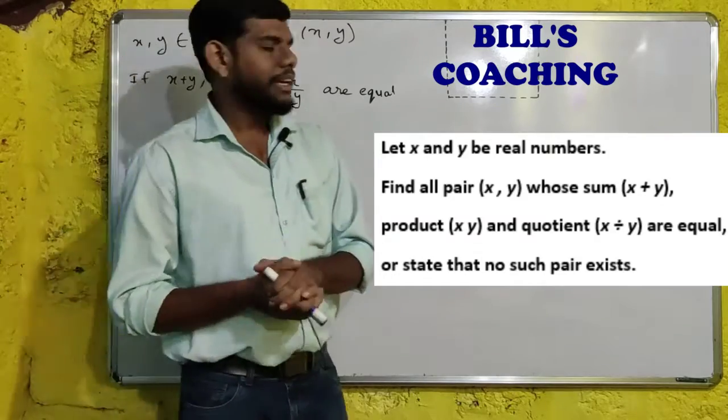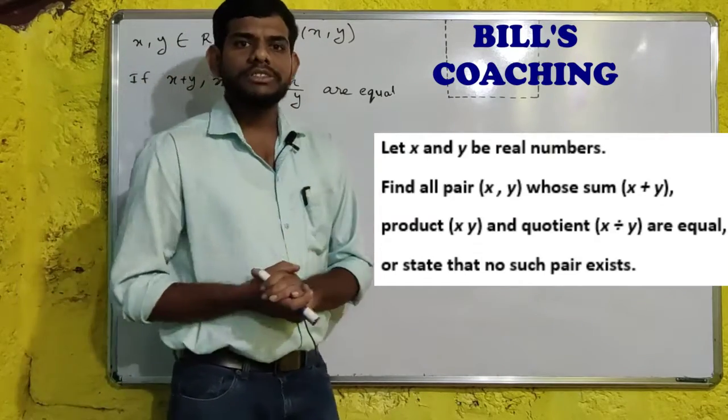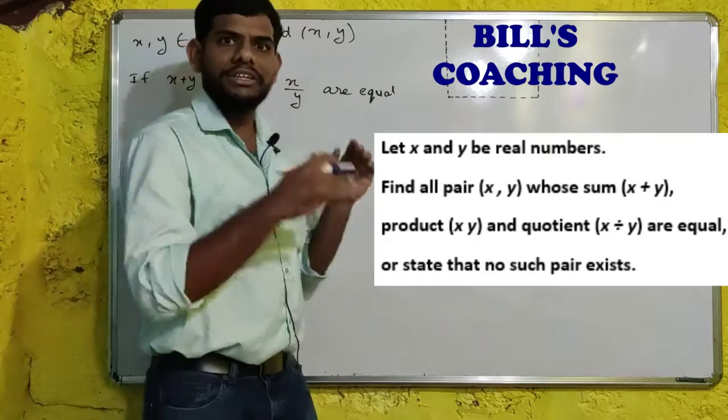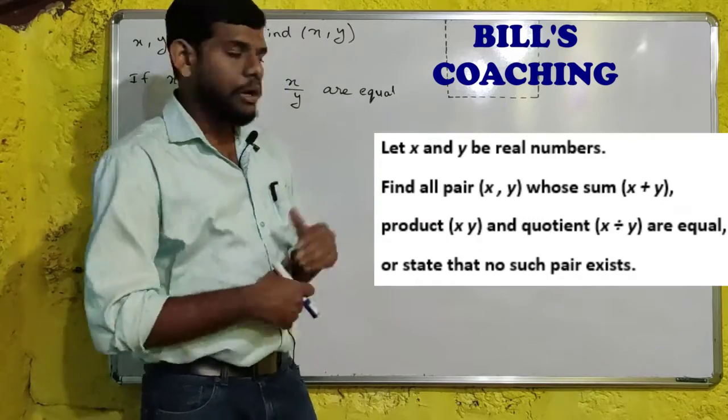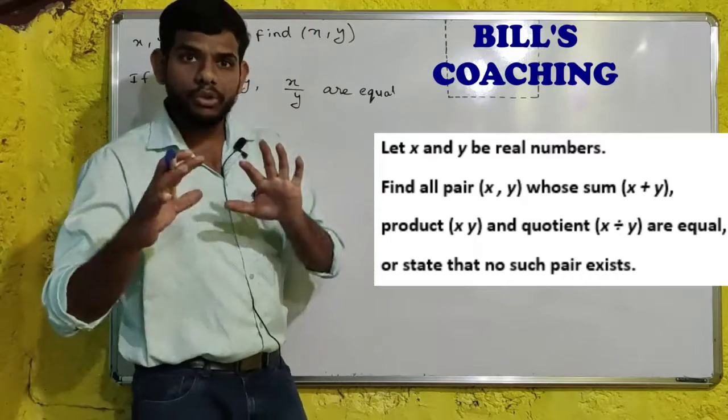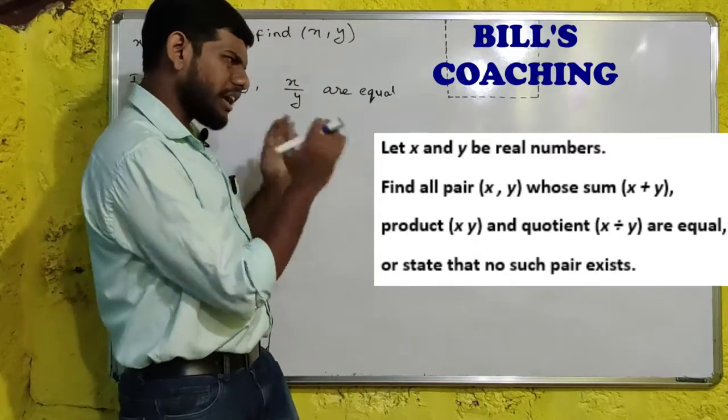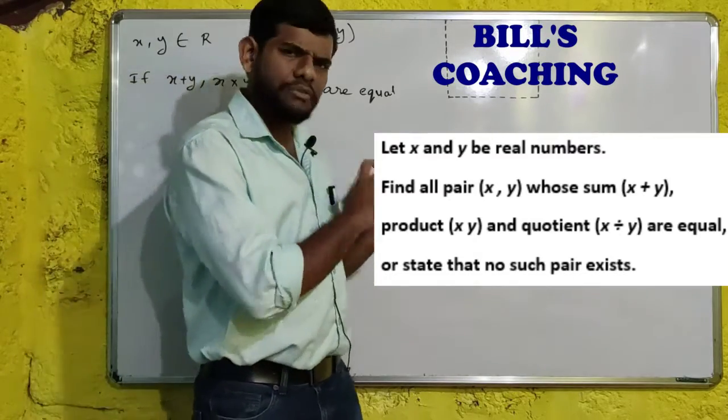So the question is: x and y are real numbers. Find a pair of x and y such that sum of x plus y, product of x into y, and quotient of x divided by y are equal, or state if no such pair exists.